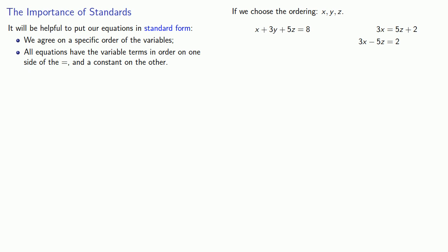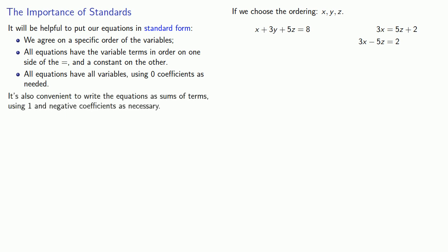One more feature of standard form is that all equations should include all variables, so we'll need to use zero coefficients as necessary. It'll also be very convenient to write our equations as sums of terms, and so that means we'll want to use coefficients of one and negative numbers as necessary. So this equation will want to include a zero y so that it has all variables, and we'll change that minus 5z into a plus negative 5z. It's also convenient to write the coefficients of one that we ordinarily omit. And so we've rewritten our original system of equations as two equations in standard form.